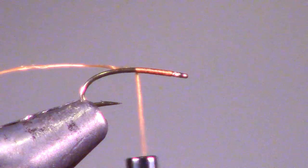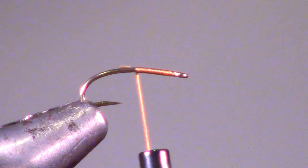We will want to start an 8-aught size thread in either red, pink, or in this case orange, close to the eye of the hook with smooth wraps and trim off the excess.